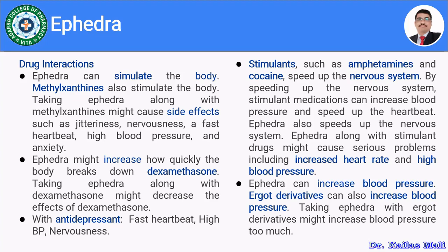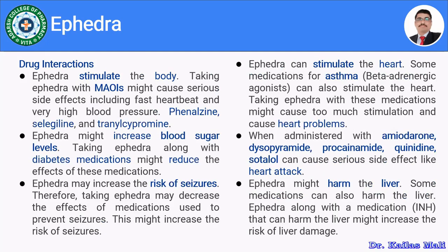Ephedra increases blood pressure, and ephedra derivatives also increase blood pressure, so they should not be combined. Taking ephedra with MAO inhibitors such as phenelzine, selegiline, and tranylcypromine may cause serious side effects including fast heartbeat and very high blood pressure, as both stimulate the body.